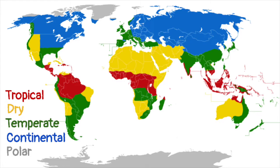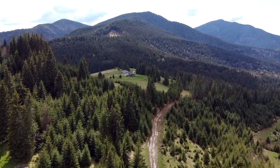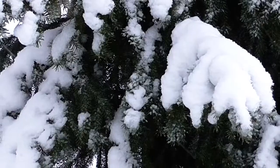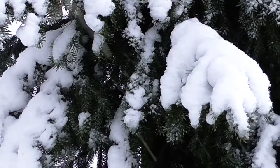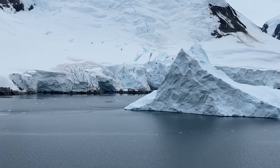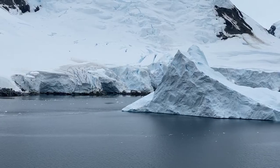Temperate areas are found to the north and south of the equator. Even farther north you'll find continental climates, which have warm to cool summers and very cold winters. Finally, polar climates are cold year-round with extremely cold winters.